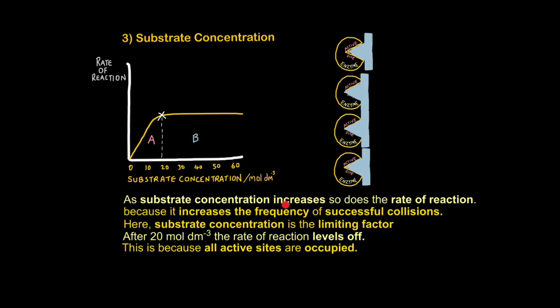So as substrate concentration increases, so does the rate of reaction. This is because it increases the frequency of successful collisions. Now I'm going to introduce a new term. Here, the substrate concentration is the limiting factor. So over this portion of the graph, where I've written A, substrate concentration is the limiting factor. It can limit the reaction.